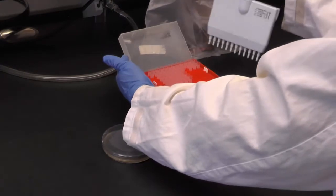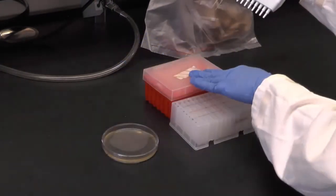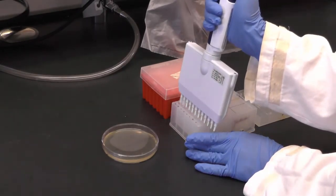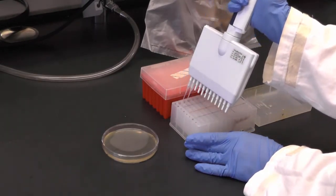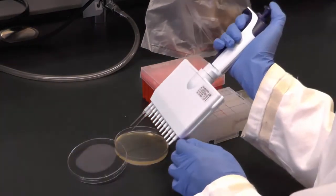Attach the number of tips onto your pipette that matches the number of dilutions you want to plate and insert the tips into the wells that hold the dilutions needed. Draw up 10 microliters of liquid and double check if the volume in each pipette tip is the same.